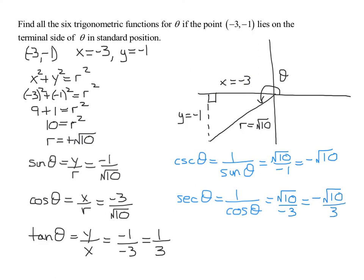The last one is cotangent of theta, which is 1 over the tangent of theta. The reciprocal of 1/3 is 3 over 1, which equals 3. So now I've found all six trig functions for the angle theta where negative 3, negative 1 lies on the terminal side.